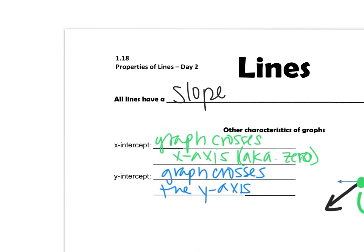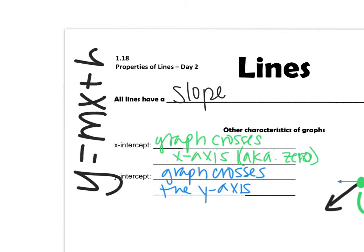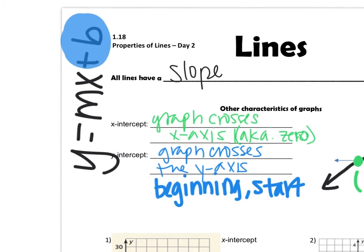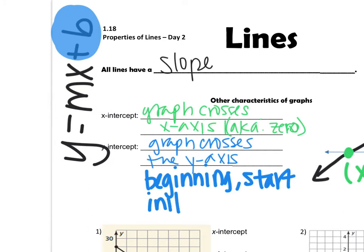It's important to note that every single line can be written in the form y equals mx plus b. Every line can be written in that form. And our y-intercept is always our b-value. It is our beginning. It is also considered our starting point, or our initial value. It is our b — it's where we begin.